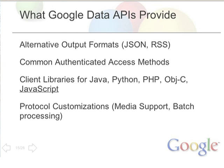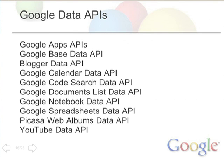Google Data has consistent features across all of its APIs, such as alternative output formats like JSON and RSS in case your software natively consumes those formats. It also has an authentication model that allows you to authenticate users to their Google account and securely access their data. Client libraries have been created for many languages that parse all this XML and Atom data into an easy-to-use object-oriented model. There are also protocol customizations — like batch processing — for things Atom hasn't tackled yet. A number of Google Data APIs exist for popular Google products such as Google Calendar, Google Spreadsheets, Picasa, and YouTube.